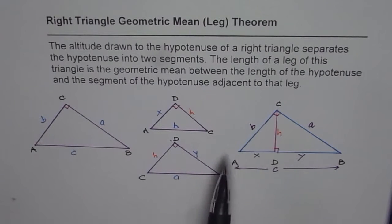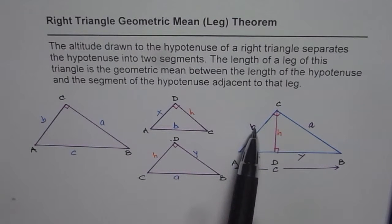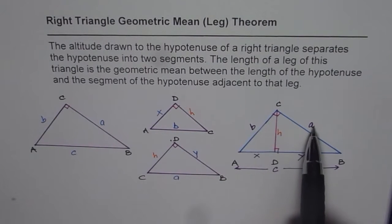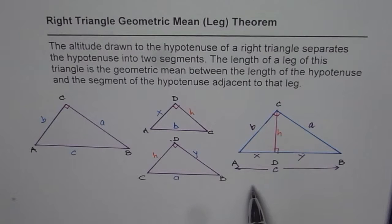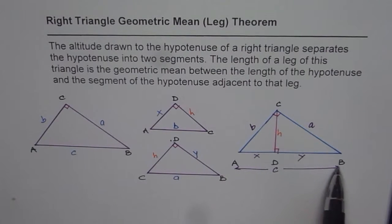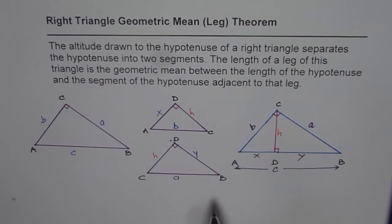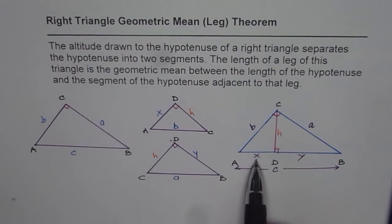That means leg b is the geometric mean of c, the hypotenuse, times x. And leg a equals the geometric mean of the hypotenuse and y — that is, a equals the square root of cy, and b equals the square root of cx. So that is what this theorem states.